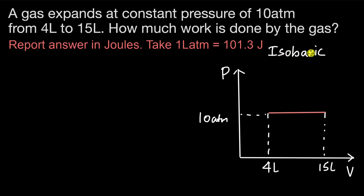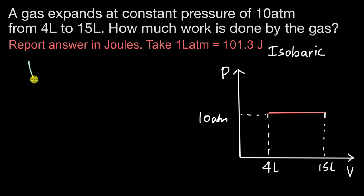Iso means constant and baric refers to — you might derive it from barometer, which is used to measure pressure. So this is a constant pressure process, which is an isobaric process. Now work done by the gas — we know that work done by the gas is given by P·ΔV.